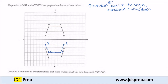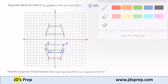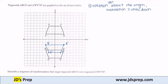Now if I go ahead and take all those points and translate them down two units — if I take B' and go down two units, now I'm at B''. I take C' down two units, now I'm at C''. I take D' down two, I'm at D''. I take A' down two, and I'm at A'', which gets me exactly to the trapezoid I wanted.